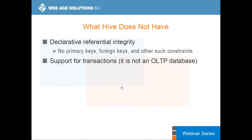To use Hive effectively, you need to learn a couple of things. There is no referential integrity in Hive — that is why data is denormalized — and there is no concept of primary keys or foreign keys. This doesn't mean the system is a fluke; it has other mechanisms to achieve the same results.